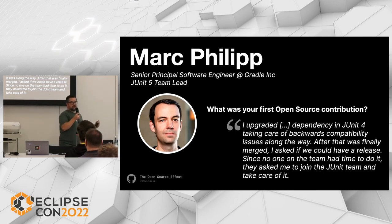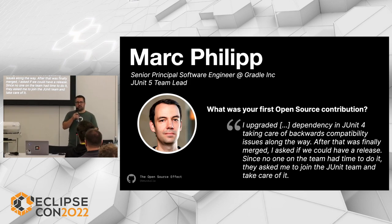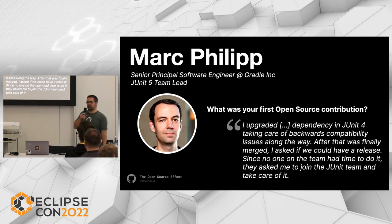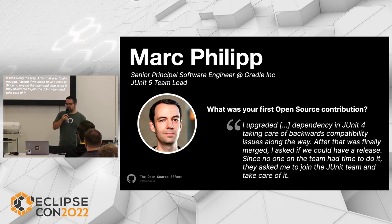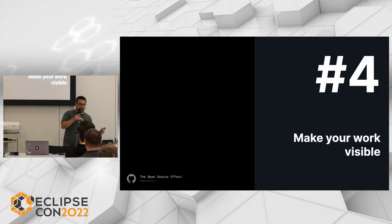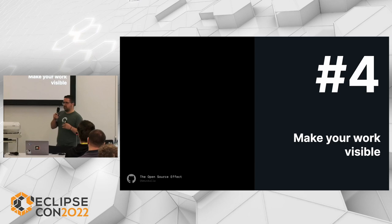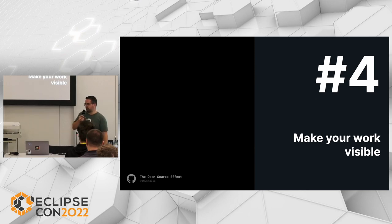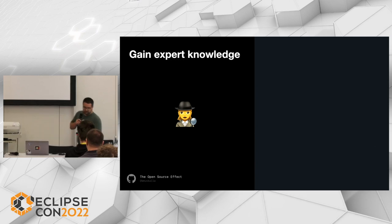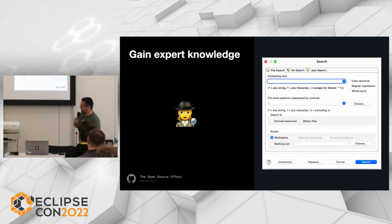This is also what Mark experienced. Mark is a principal engineer at Gradle and the JUnit 5 team lead. How did he get there? He had to fix a dependency resolution conflict with JUnit 4, got that merged as a PR, there was no one around to maintain JUnit 4, so he took it on and did the next release to unblock his own company. Over time he got into the role of JUnit 5 team lead working on that part of the time at Gradle. The key lesson: make it visible what you do. Be public about the work you do so others can benefit, and you can benefit going forward.